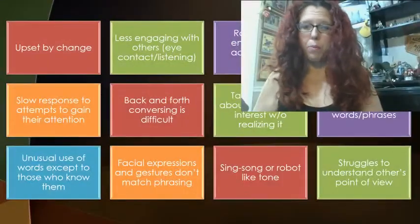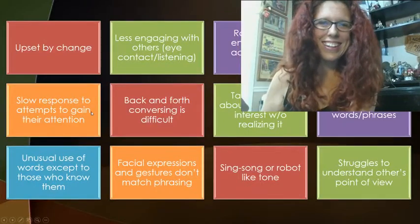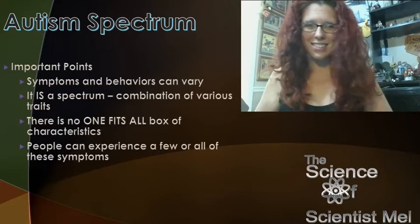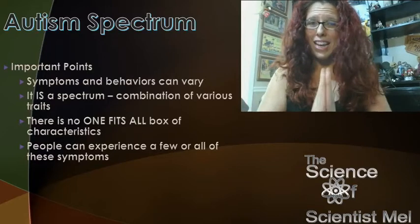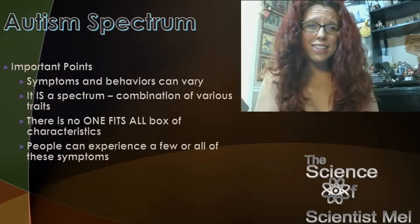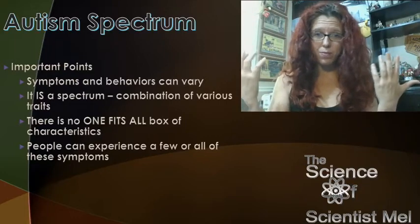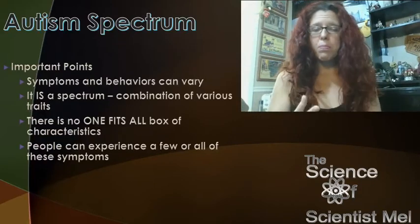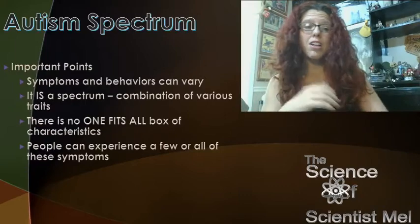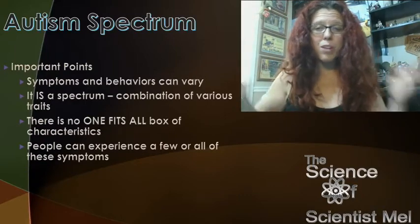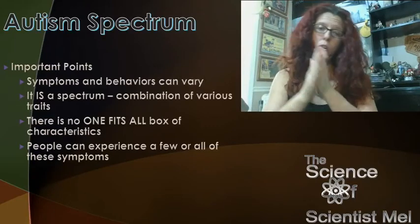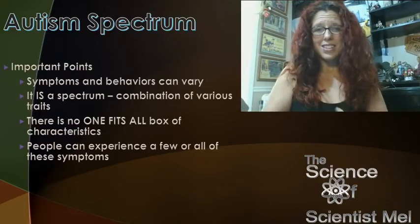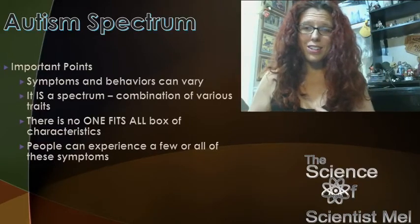Symptoms and behaviors for people on the spectrum can vary. It is a spectrum — combinations of various traits with no one-size-fits-all. People can experience a few, a combination, or all of these symptoms, more intense or less intense, depending on where they fall. You have to get to know a person to see where they fall.